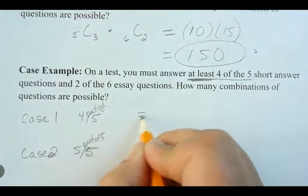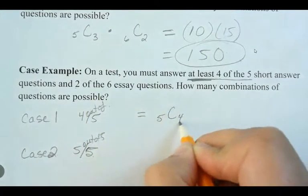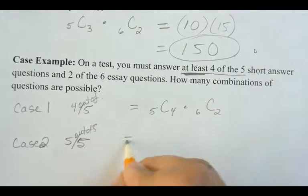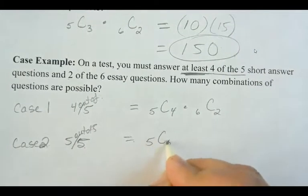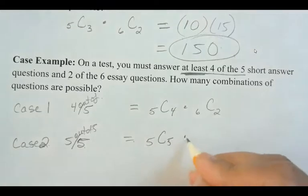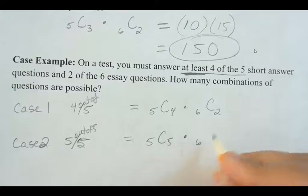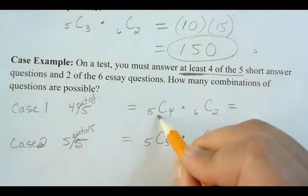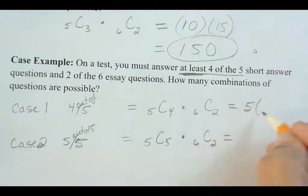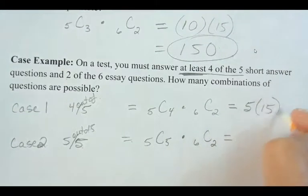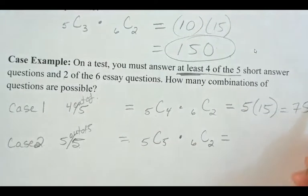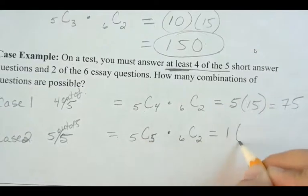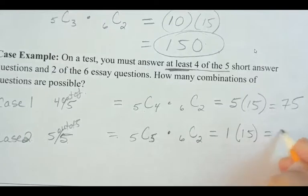Okay. So for this first case, we've got, we can choose 4 out of 5 of the short answer questions, and we can choose 2 out of the six. And then our second case here, where you've got 5, you have to choose 5 of them. So you're basically doing all of them. So there's really not much choice here, because then you end up getting one for that. So 5 choose 4 is 5. And then 6 choose 2 is 15. And that equals 75. And 5 choose 5, that is 1. And 6 choose 2 is 15.